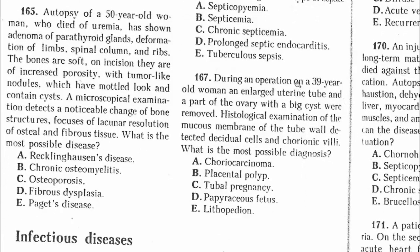Question 167: During an operation on a 39-year-old woman, an enlarged uterine tube and a part of the ovary with a big cyst were removed. In the mucous membrane of the tube, decidual cells and chorionic villi were detected. The presence of decidual cells and chorionic villi indicates pregnancy. Since this pregnancy is taking place in the uterine tube rather than the uterus, we call it tubal pregnancy. The answer is C.